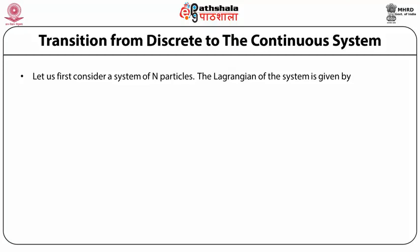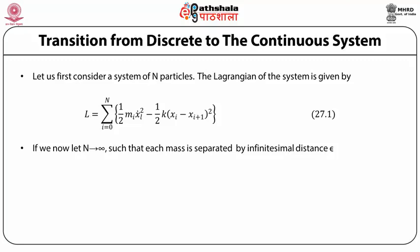Let us first consider a system of n particles. The Lagrangian of the system is given by L = summation over i from 0 to n of: (1/2) m_i x̊_i² − (1/2) k (x_i − x_{i+1})². If we now let n tend to infinity such that each mass is separated by infinitesimal distance epsilon, then we have L = summation over i from 0 to n of: (1/epsilon) × [(μ/epsilon) x̊_i² − (k/epsilon)(x_i − x_{i+1})²].